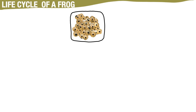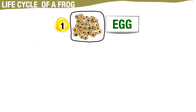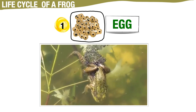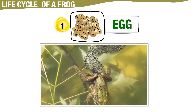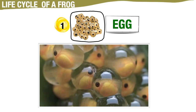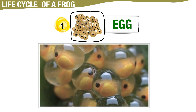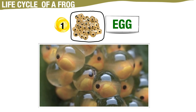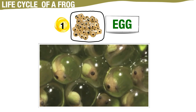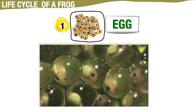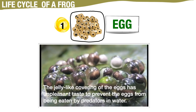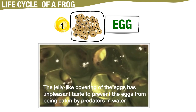A frog begins life as a fertilized egg. A female frog releases a lot of eggs from her body at one time into water. The eggs float on water in a jelly mass or cluster. A frog's egg has a jelly-like covering, but it has an unpleasant taste. The jelly-like covering has an unpleasant taste to prevent the eggs from being eaten by predators in water.